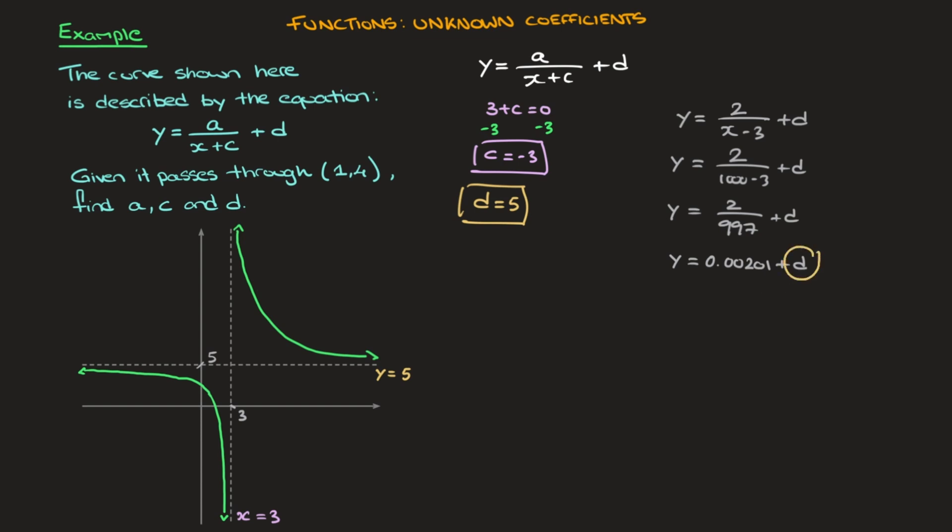Which definitely suggests that d is equal to 5. And what I showed you just now was with x equals 1,000. And we could convince ourselves even further by replacing x by say 1 million. In which case we get y equals 2 over 1,000,000 minus 3 plus d. And that would be y equals 2 over 999,997 plus d. And by all means check, but that would be equal to 0.000002 plus d.